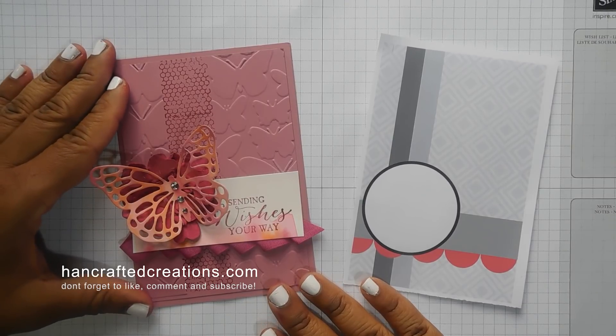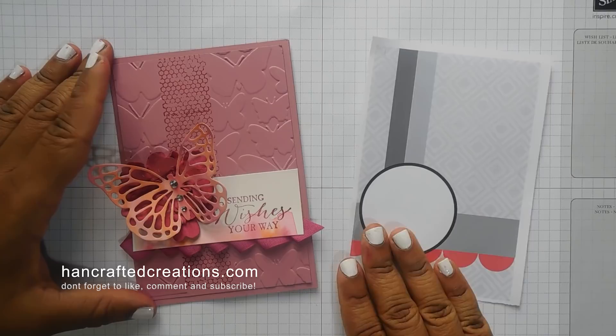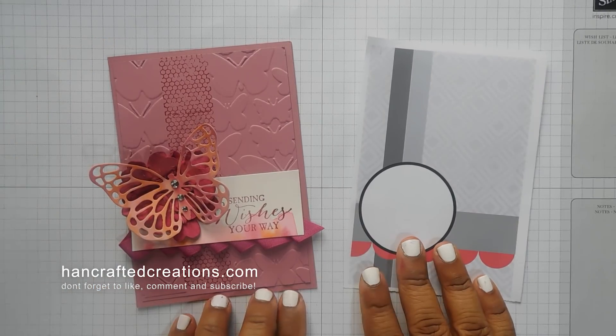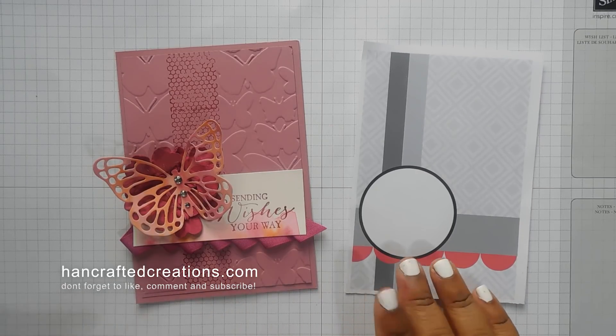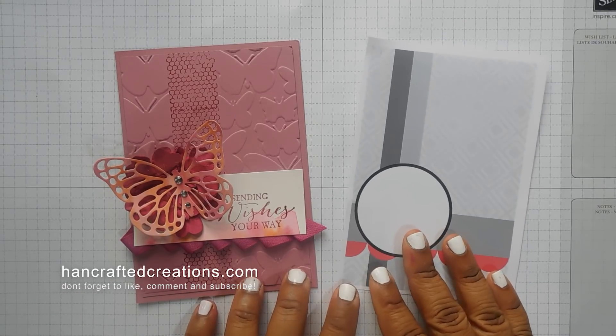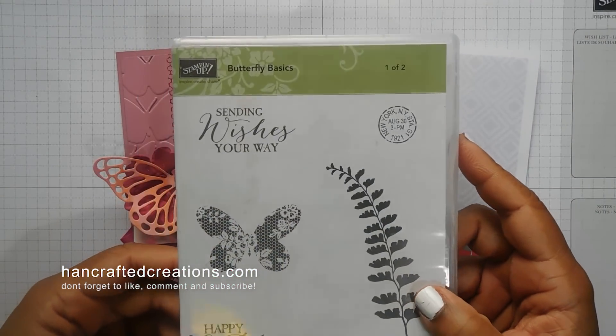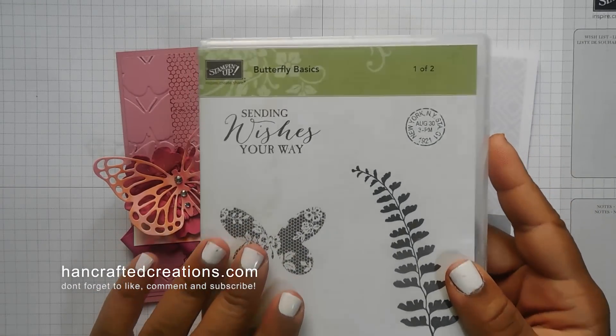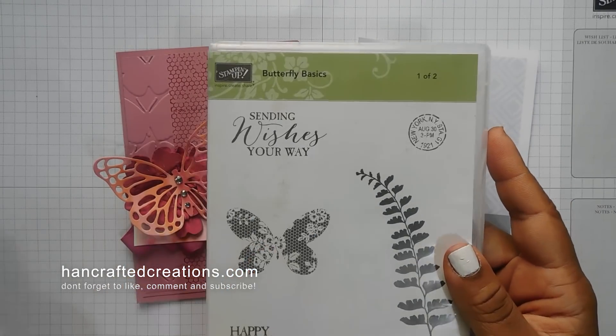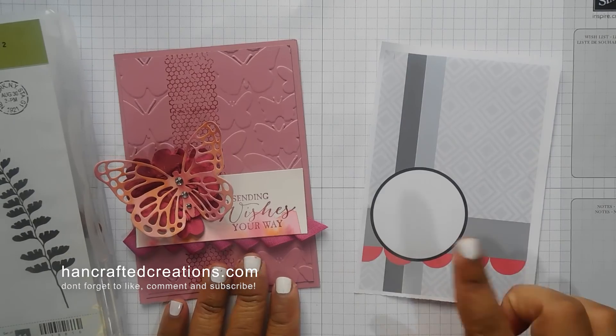This is the card that we're going to be making for this week's Wednesday challenge video. We're going to be using a card sketch which is right here, which you'll be able to find on my website. And we're going to be using the Butterfly Basics stamp set and the coordinating dies. These are retiring, so if you want to get it, get it now basically. There will be a link in the description for the stamp set and for the card sketch.